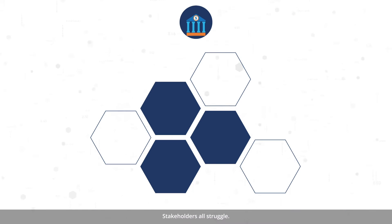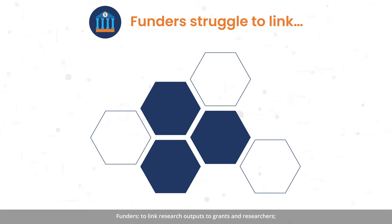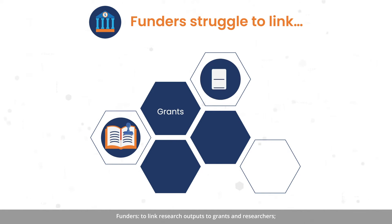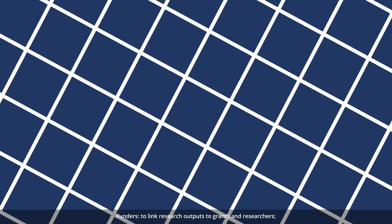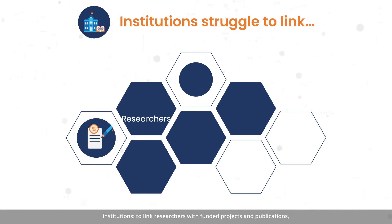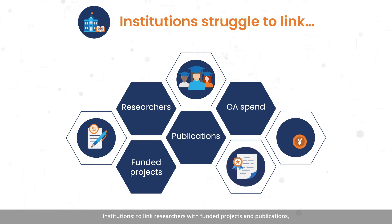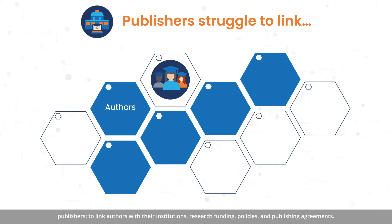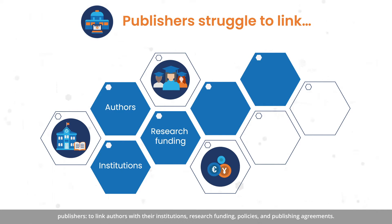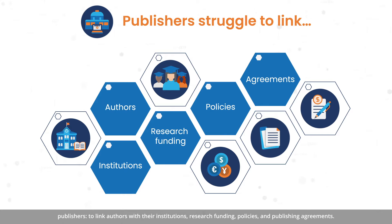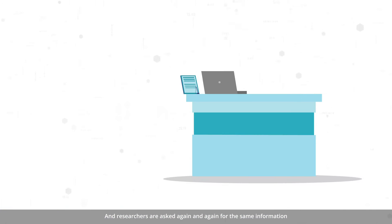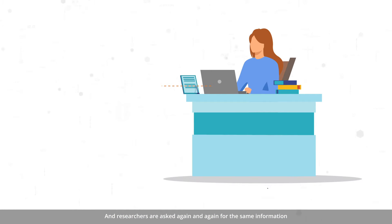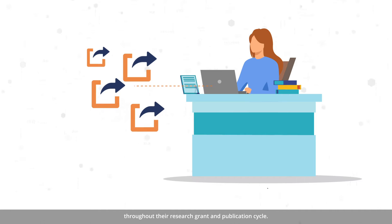Stakeholders all struggle. Funders to link research outputs to grants and researchers. Institutions to link researchers with funded projects and publications and understand their spend on open access. Publishers to link authors with their institutions, research funding, policies, and publishing agreements. And researchers are asked again and again for the same information throughout their research, grant, and publication cycle.